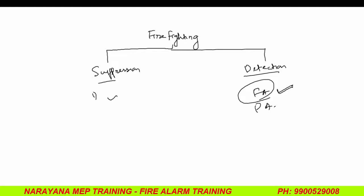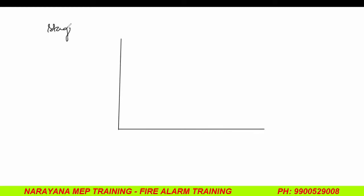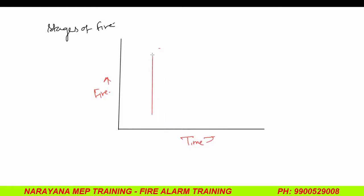If I draw, this is the stage of fire — different stages of fire. On this side is fire intensity, and this side is time. There are basically four stages of fire. In the first stage, nothing is visible, but we can still get an alarm. That is called the air sampling method, or VESDA — Very Early Smoke Detection Apparatus.